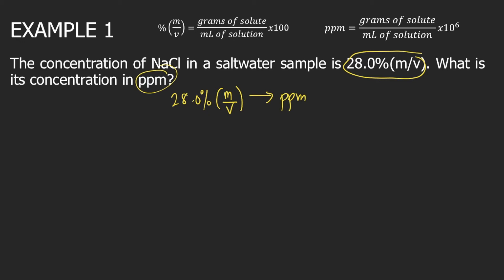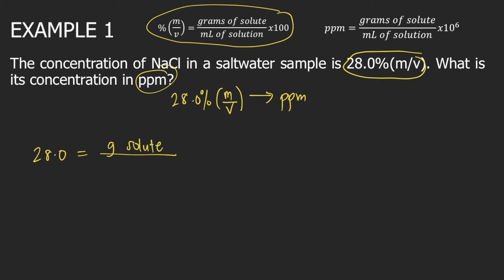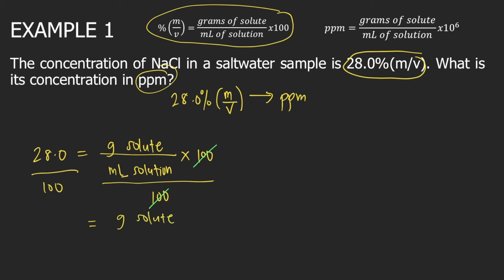First, we will use the formula for percent mass over volume. It says that percent mass over volume — so 28.0 — is equal to grams of solute divided by ml of solution, times 100. What you need to do is divide both sides of the equation by 100. So on the right side, 100 will cancel, and what is left is grams of solute per ml of solution. On the left side, you have 28.0 divided by 100, which equals 0.280.